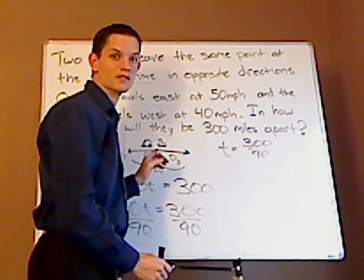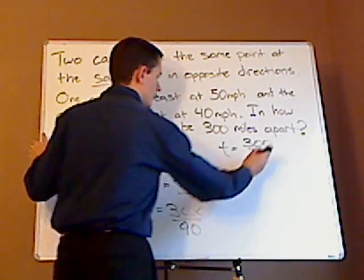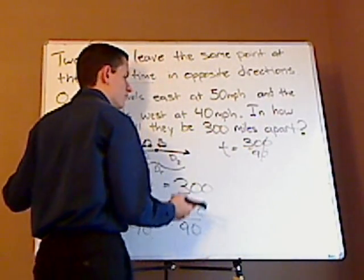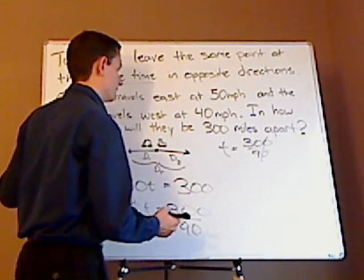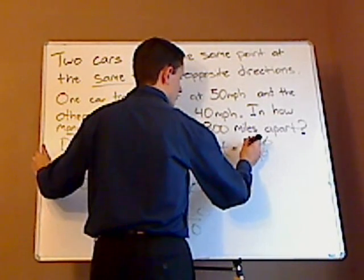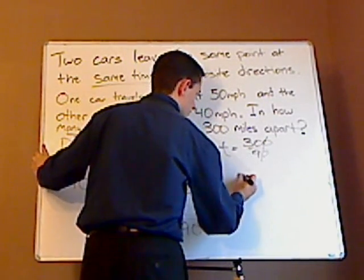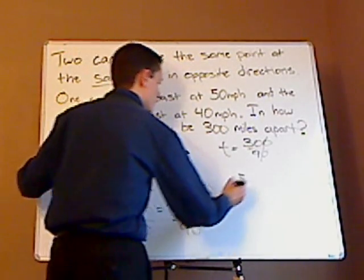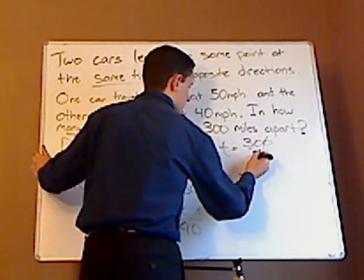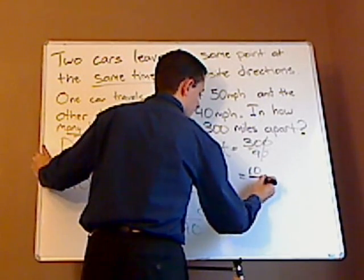I know both of them are divisible by 10. So I'm going to knock off a zero. So I have 30 over 9. I know both of them are divisible by 3. So I'm going to divide the numerator and denominator by 3. When I do that, 30 divided by 3 is 10, and 9 divided by 3 is 3.